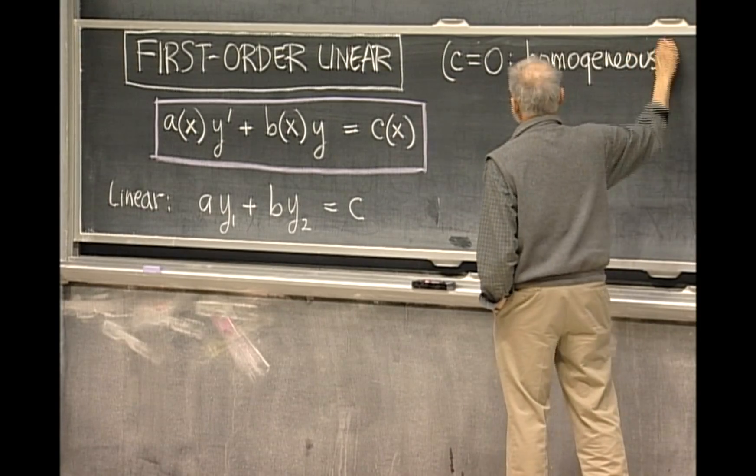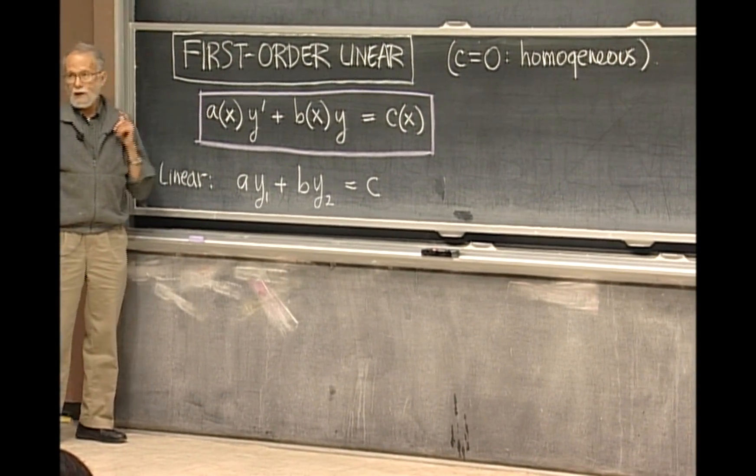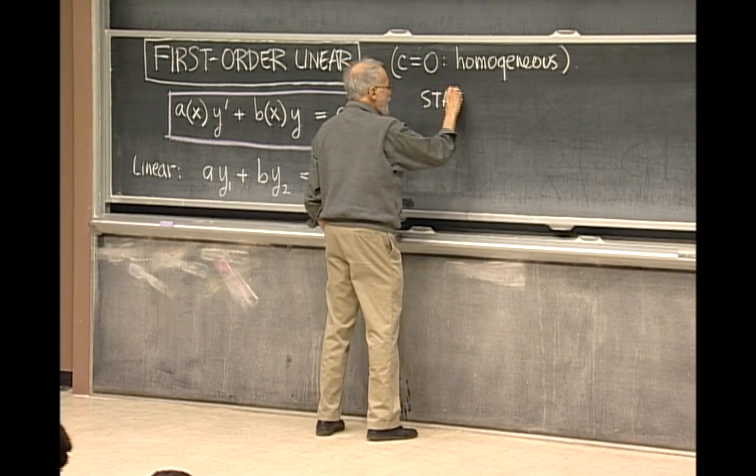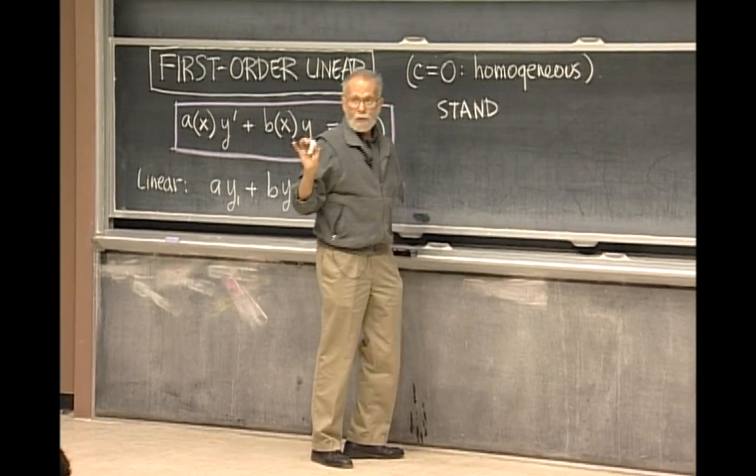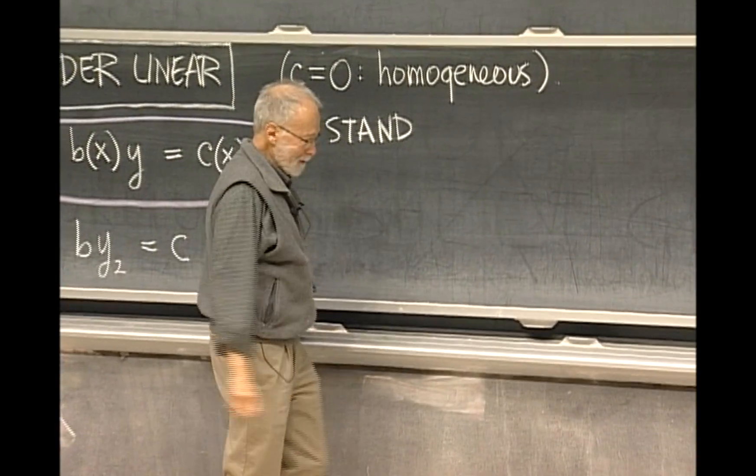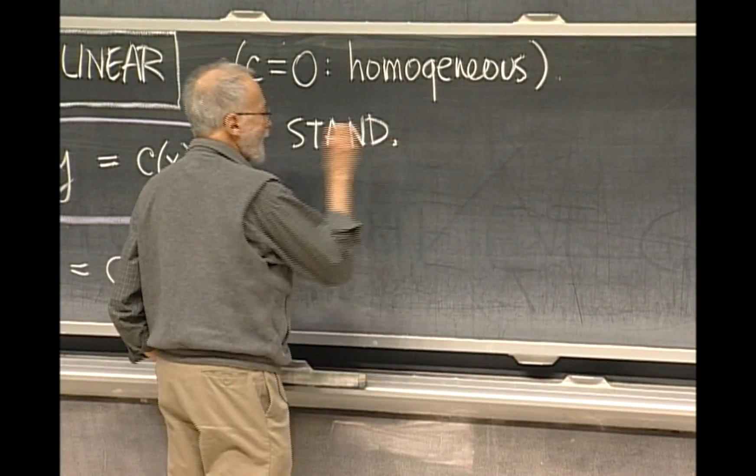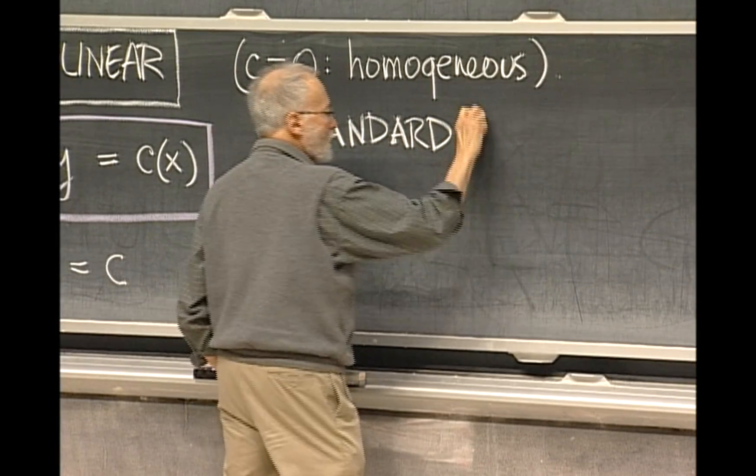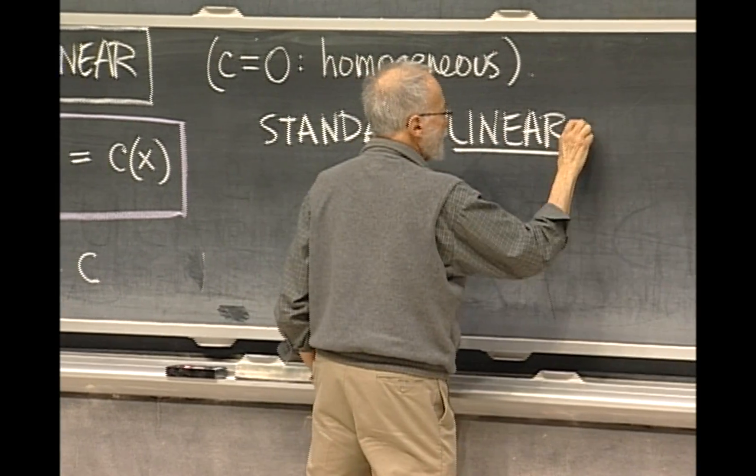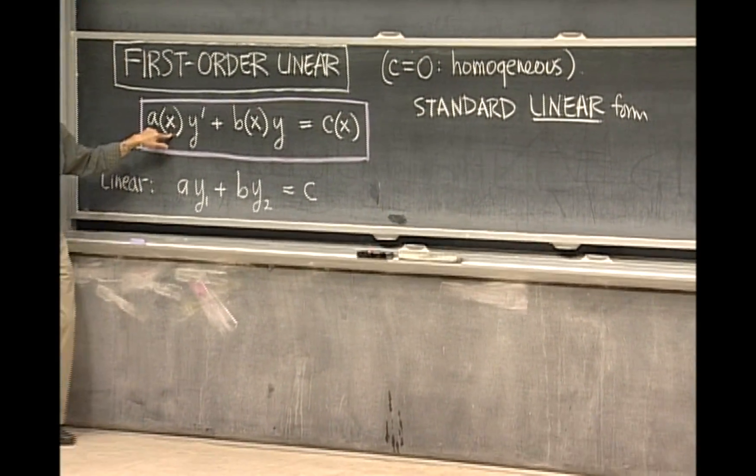Now this is a common form for the equation, but it's not what's called standard form. The standard form for the equation - and this is going to be a prime source of confusion - the standard linear form is when the first coefficient of y prime is taken to be 1.